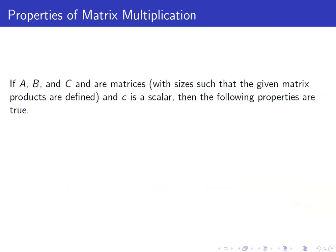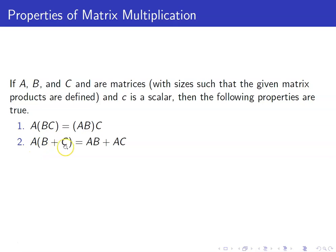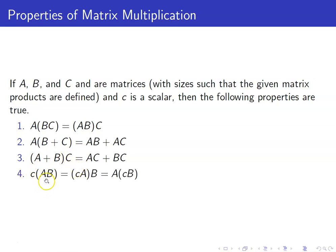Let us look at the properties of matrix multiplication. First, matrix multiplication is also associative. Next, matrix multiplication is distributive over matrix addition. It doesn't matter where the parentheses are — you can simply pull out the scalar. Take note that these properties have their corresponding real number versions.